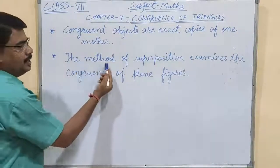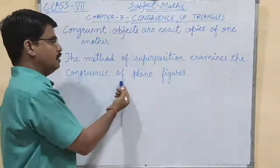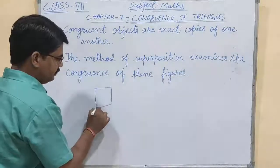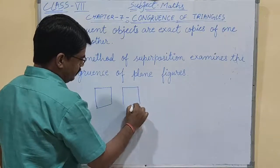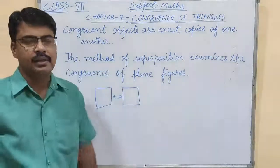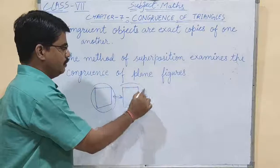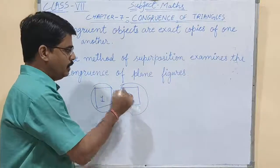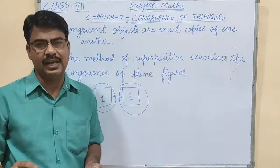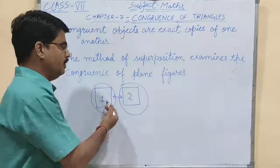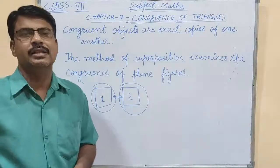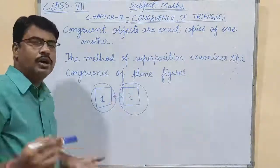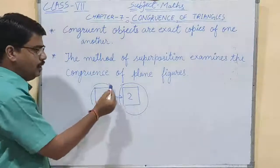The method of superposition examines the congruence of plane figures. For example, suppose I have taken a square. When this square is equal to another square — when all the sides of the first are equal to all the sides of the second figure — and when we put the first figure on the second figure, it covers the whole figure exactly, then we can say our first figure is congruent to the second figure. Congruency means equal length and also equal angles.